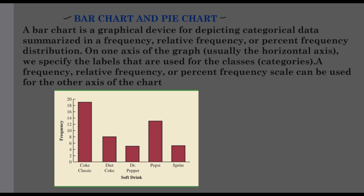In the frequency distribution style, if we organize the data in a bar chart, we represent the horizontal axis. On the horizontal axis, we specify the labels used for the classes — we divide the particular classes along the horizontal axis. The other axis is related to frequency, relative frequency, or percent frequency. We give a bar for each element. In the bar chart, we write the bar form — the frequency. Here Coke Classic looks like 19, the next value is 8, then Dr. Pepper is 5. This is a bar chart.